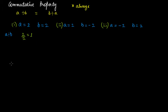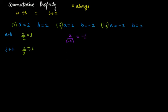2 divided by 2 gives an answer of 1. And b divided by a in this case is again 2 divided by 2, which is also 1. In the second case, a divided by b is 2 divided by minus 2, giving minus 1. And b divided by a is minus 2 divided by 2, also giving minus 1.